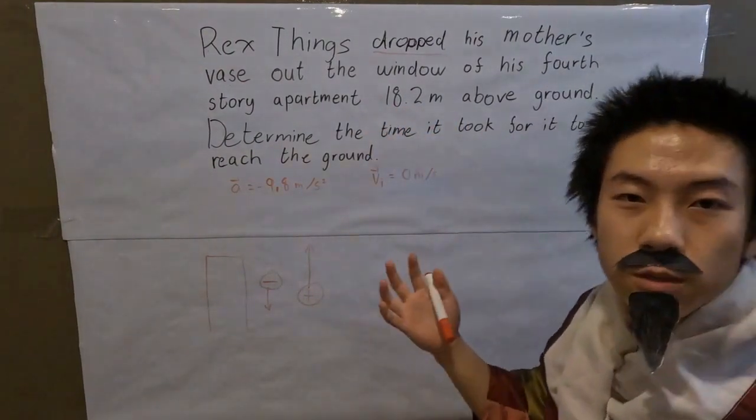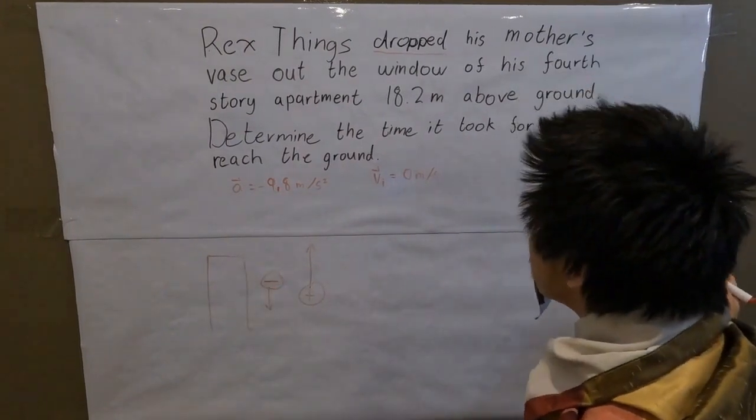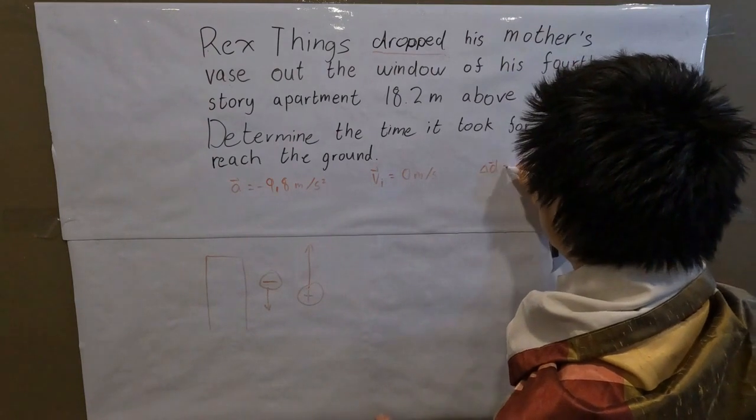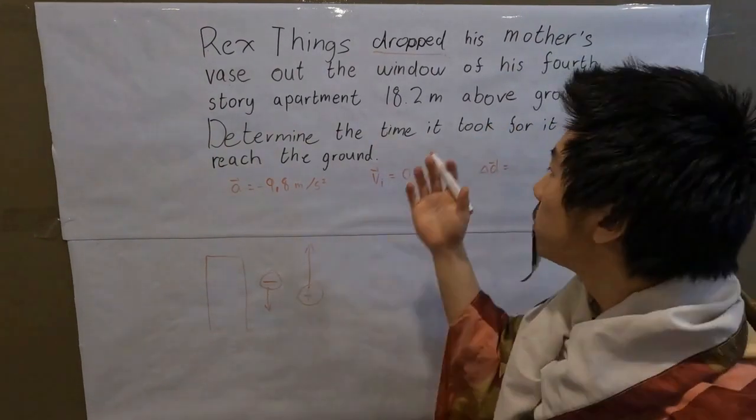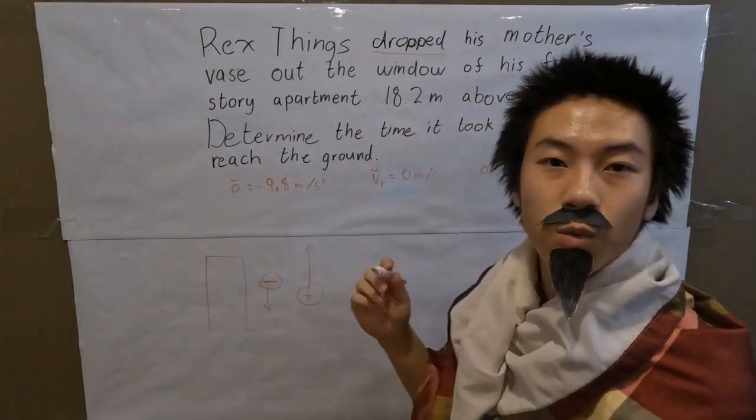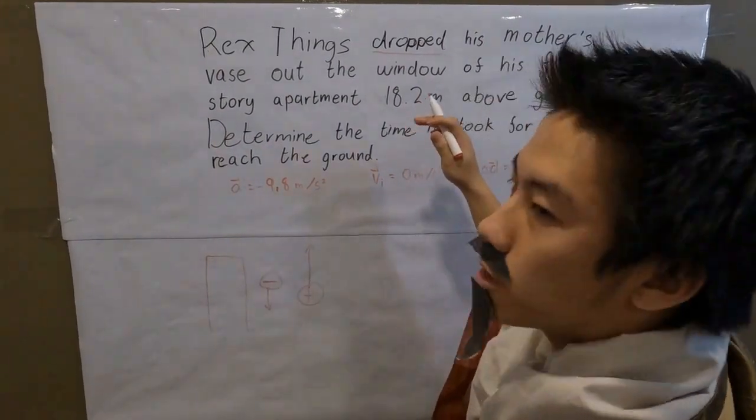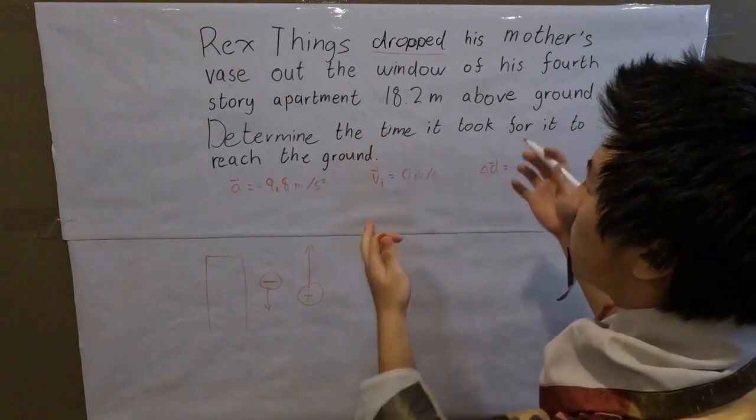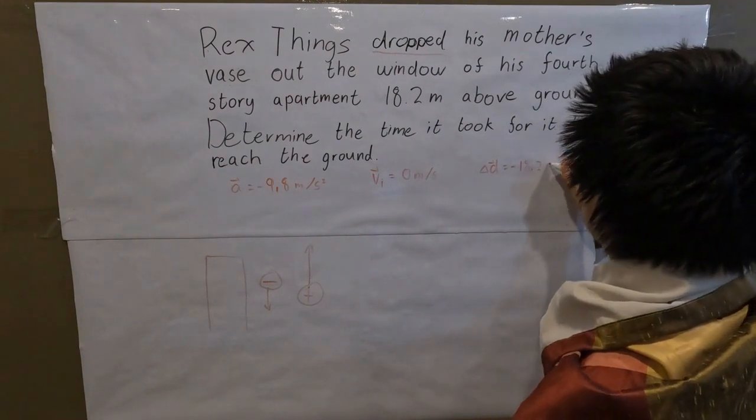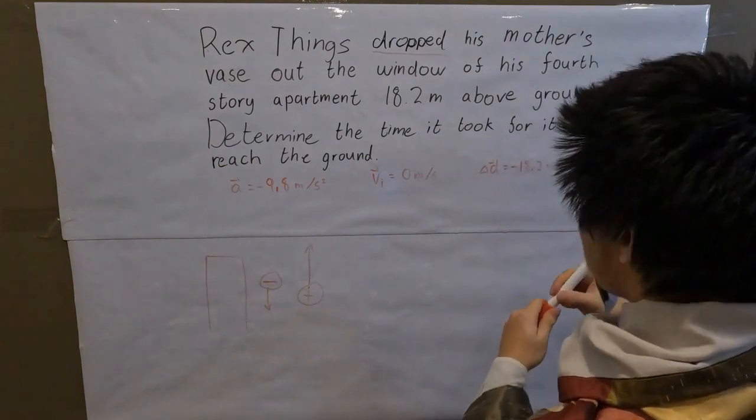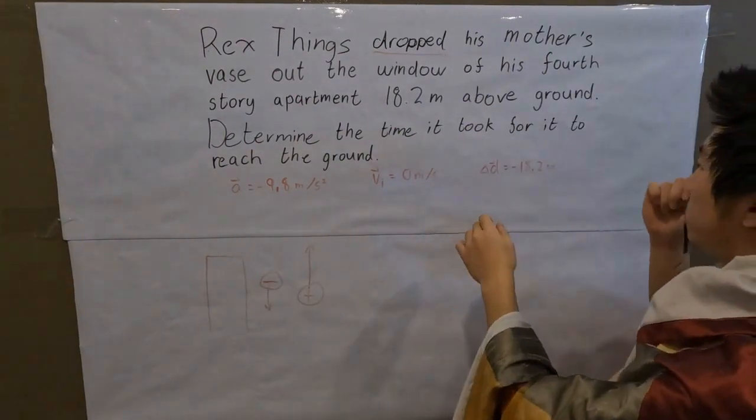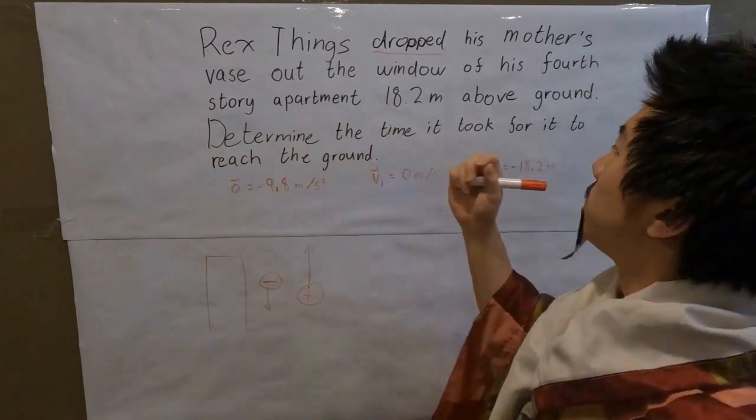...the displacement the vase took, so the change in position. The change in position is equal to 18.2 meters, but not only 18.2 meters—it is negative 18.2 meters. Why? Because the object started from a higher place and it ended up going down, and so its change in position must be negative. And so it's negative 18.2 meters. These three pieces of information that were given to us are crucial for the solving of this question.